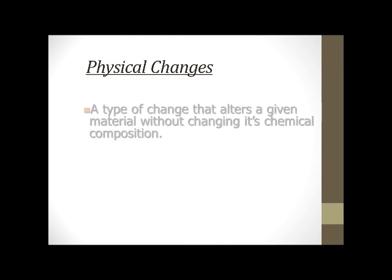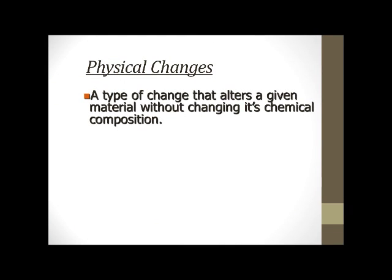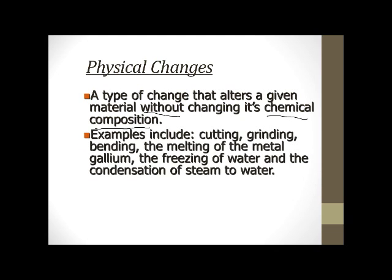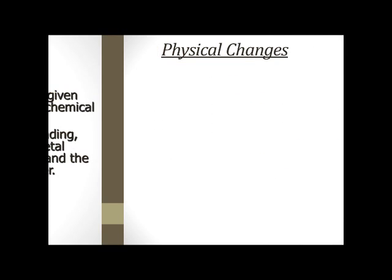All right, on to physical changes. Definition of physical change is a type of change that alters a given material without changing its chemical composition. What kind of change would it be if it changed its chemical composition? All right, so some examples of physical changes include cutting, grinding, bending, melting of metal, for example, gallium. The freezing of water and the condensation of steam to water. These are all physical changes. You haven't changed the chemical properties of the substance, only changed its physical state.